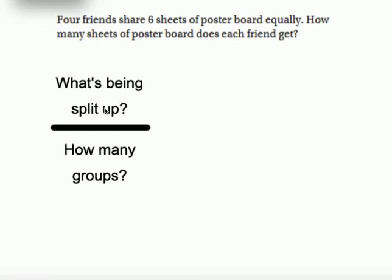What you need to remember is the top number, or your numerator, or your dividend in a division problem, the top number is what's being split up. So when you read a story problem, the top number is always going to be what number is being split up.